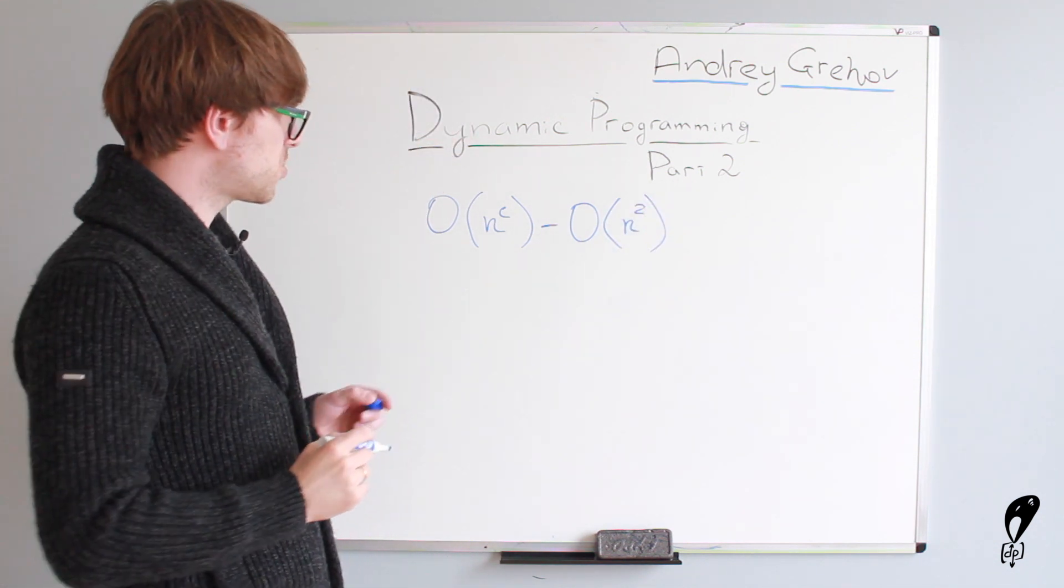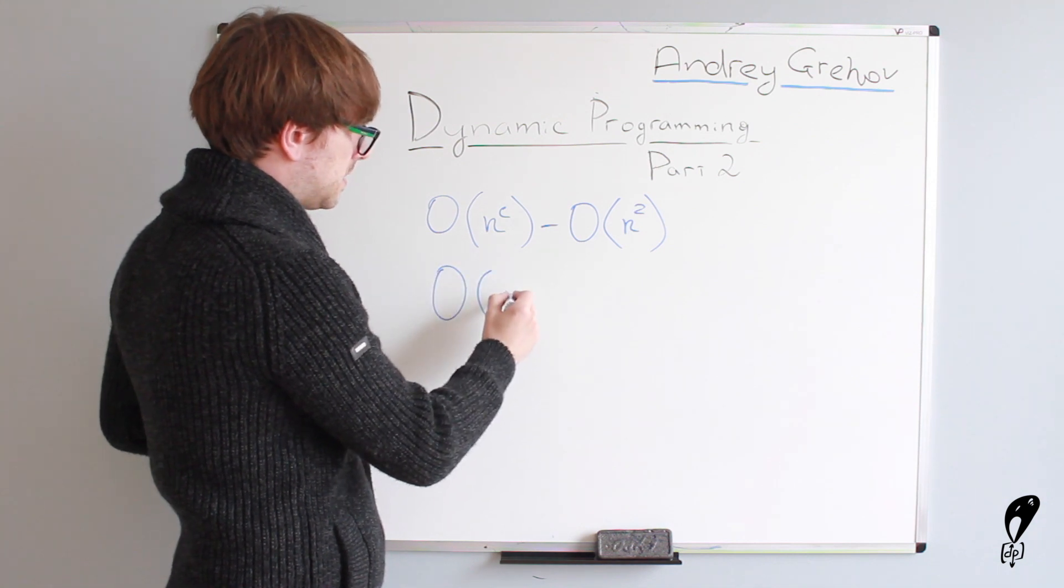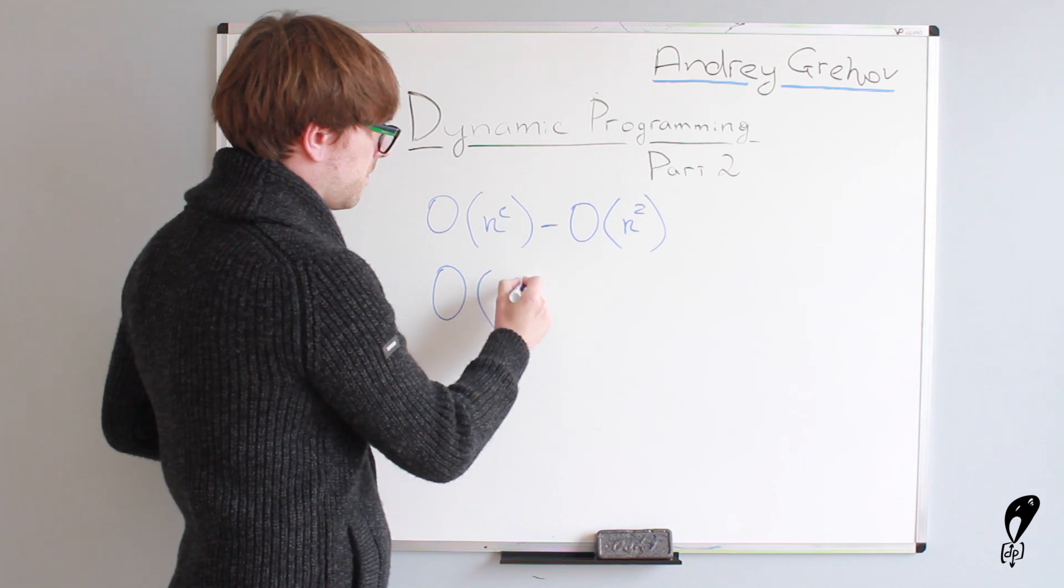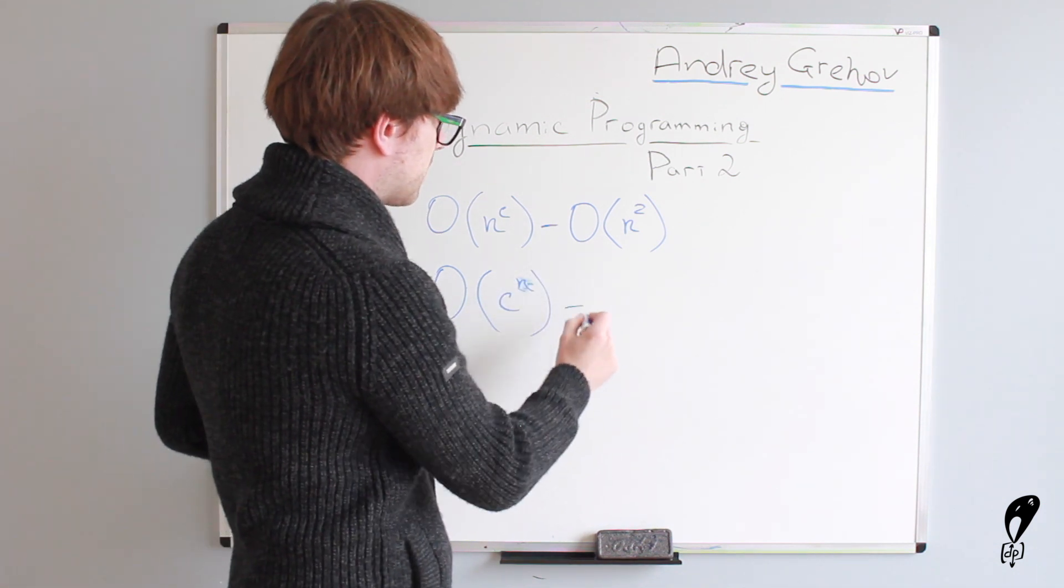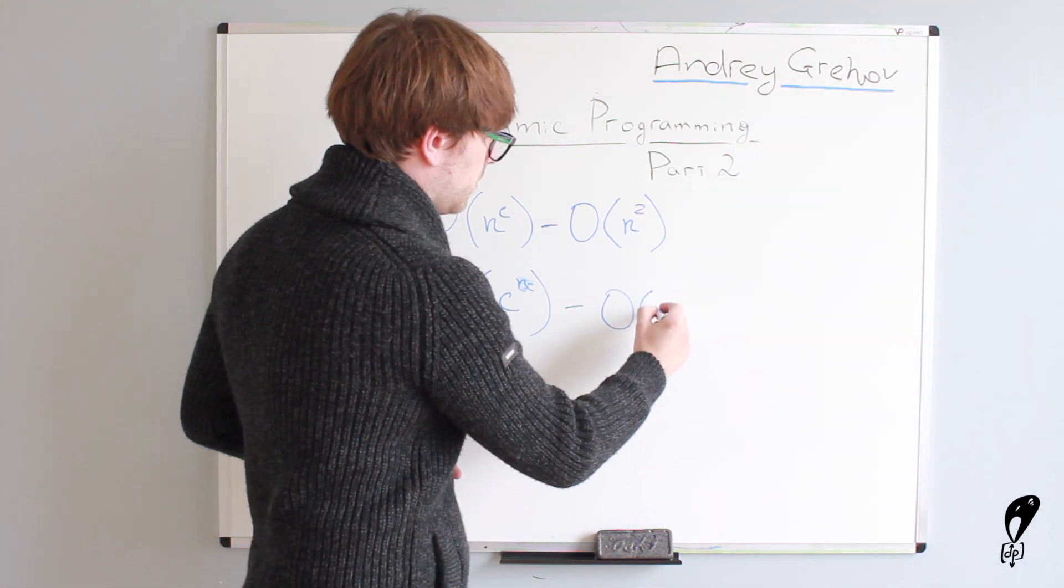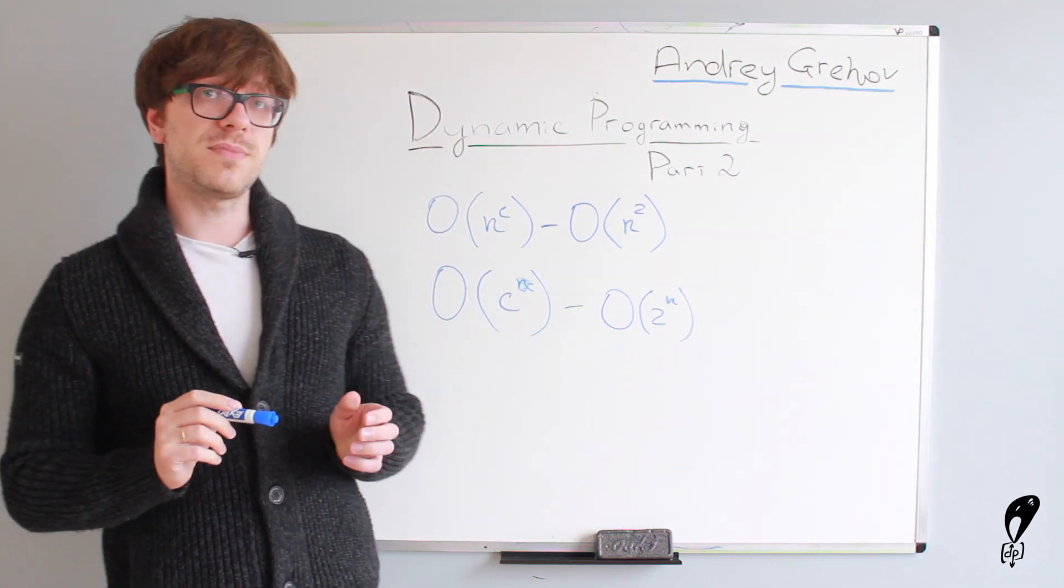Whereas exponential runtime complexity would be big O of c to the power of n. And the example of exponential runtime complexity is big O of 2 to the n. So, what does it all mean?